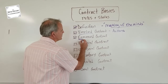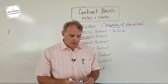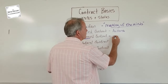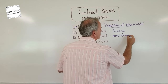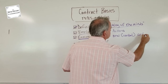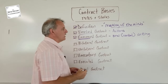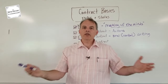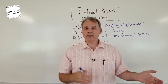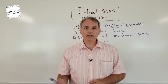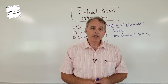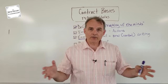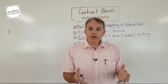An express contract is straightforward — it means expression, so the two parties express their intent. An express contract can be oral or in writing. For example, a purchase contract or a lease agreement — the landlord and tenant are expressing their intention in the contract. The tenant says, 'For $500 a month, I'll rent your place,' and the landlord says, 'Great, here are the keys.' Whether oral or written, they have expressed their intentions and agreed to it.